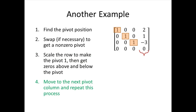We're ready to move on to the next pivot column. There's only one column left. That last column cannot be a pivot column — the pivot can't be in rows one, two, or three since those already have pivots, and row four is all zeros. So that last column is not a pivot column. We're done, and the matrix is in reduced echelon form.